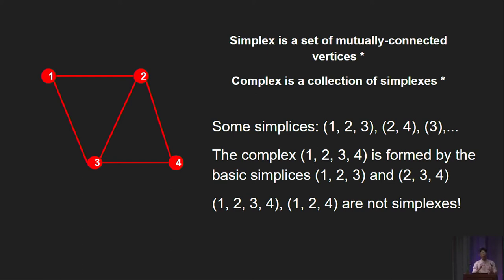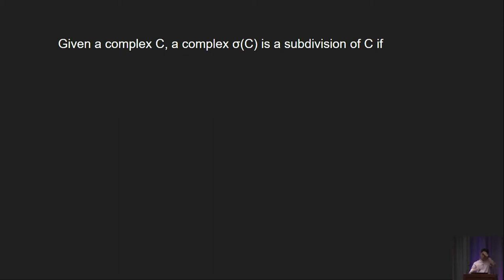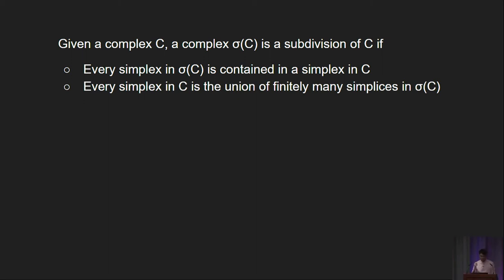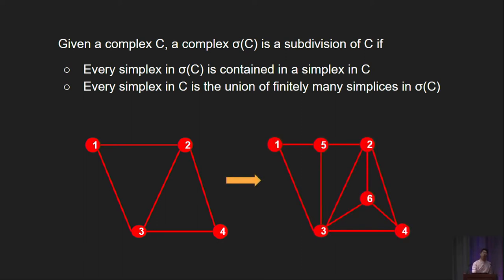Simplexes and complexes are the basic objects you need in topology, but you also need to know two operations you can perform on them. The first is something called a subdivision. Given a complex C, a complex sigma(C) is a subdivision of C if every simplex in sigma(C) is contained in a simplex in C, and every simplex in C is the union of finitely many simplexes in sigma(C). Intuitively, a subdivision describes the process of triangulation: you give me a complex, I can add more vertices and edges to add more detail to the structure, but the overall form is still maintained. For example, given the previous complex, I can add nodes 5 and 6, add a few more edges to form more simplexes, but the overall structure remains the same.